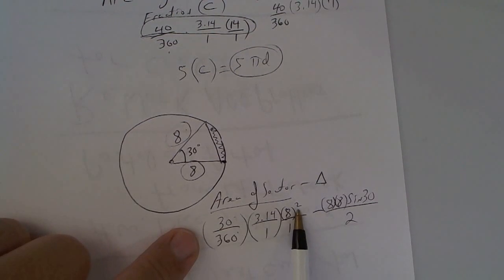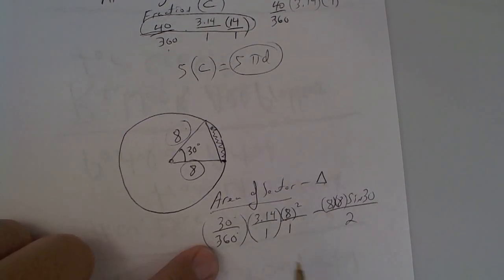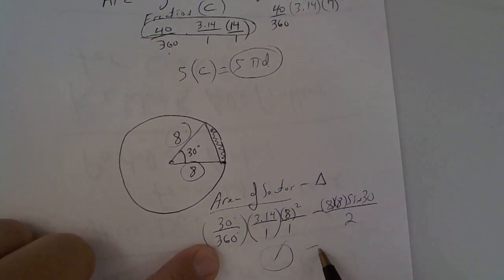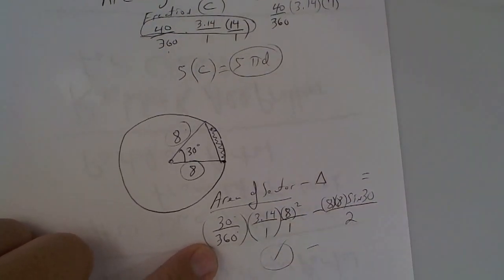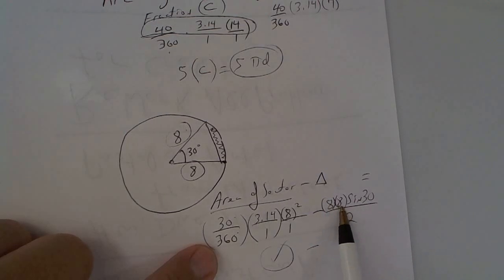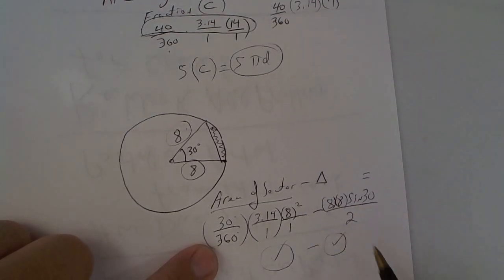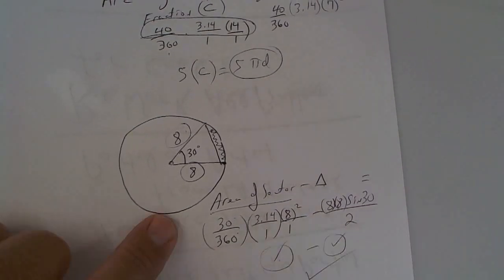You would square it, multiply, multiply, divide by 360 and get a number. You would do the sine of 30, press equals, make sure you press equals, times 64, divide it by 2, and you would get another answer, and then subtract, and you got that slither.